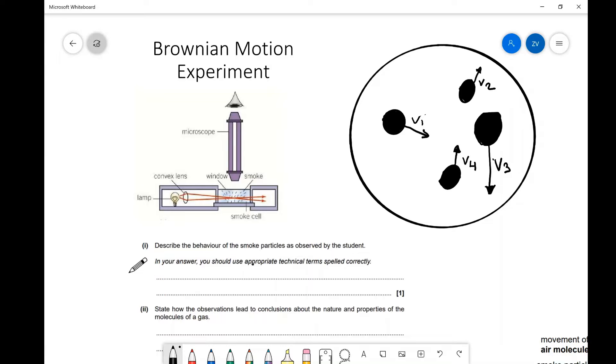What I would have drawn here on the right is actually what we would see if we were to look down into the microscope. We would see some smoke particles and they're going to be moving at random speeds, random velocities.